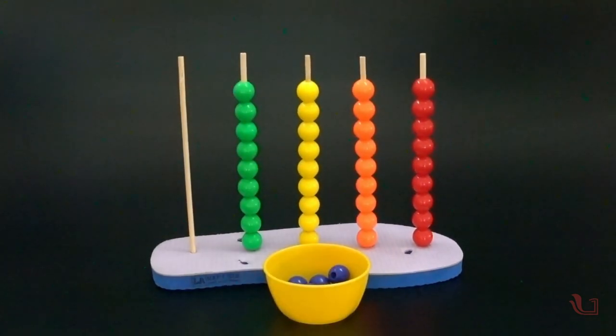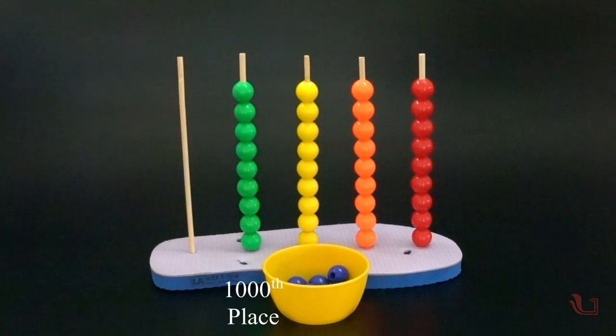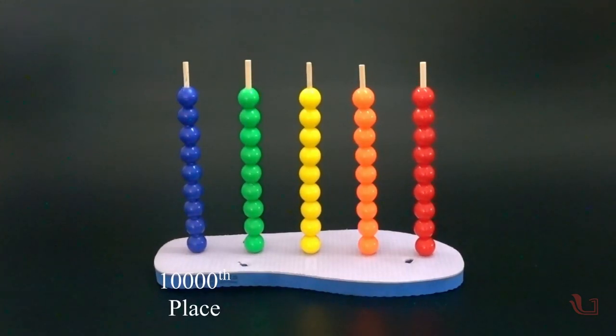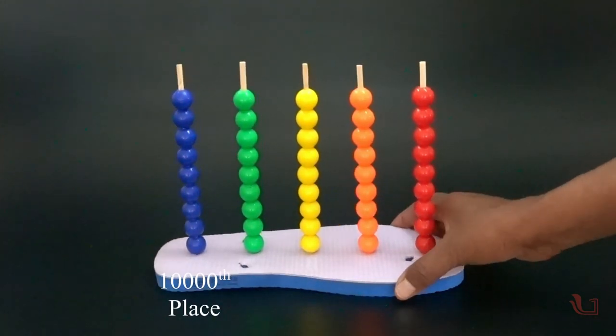Similarly, we can place 9 beads in the thousands and ten-thousands place and learn the place value using this simple abacus.